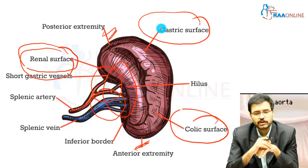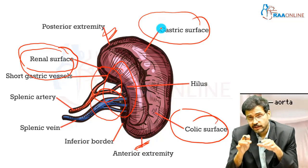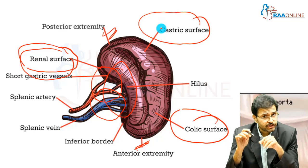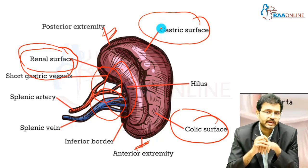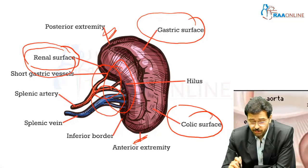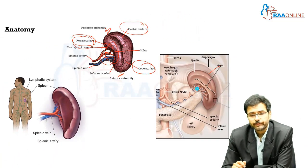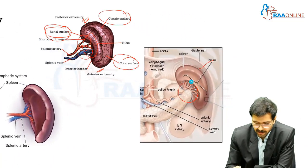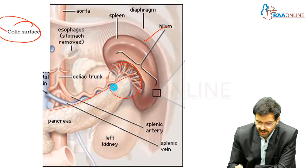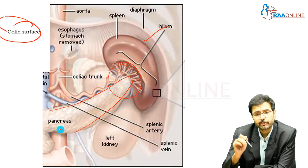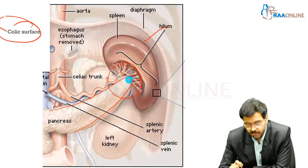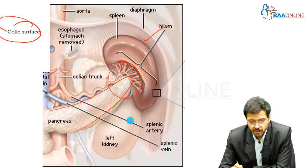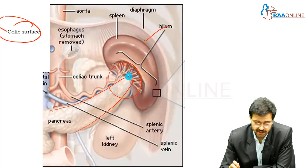This is again very important: while doing a splenectomy, injury to the splenic flexure can occur while dividing the phrenicocolic ligament. When you look at this picture, you find that the tail of the pancreas is at a higher level compared to the body and neck, and its association with the hilum can be seen here — it is located within the lienorenal ligament.